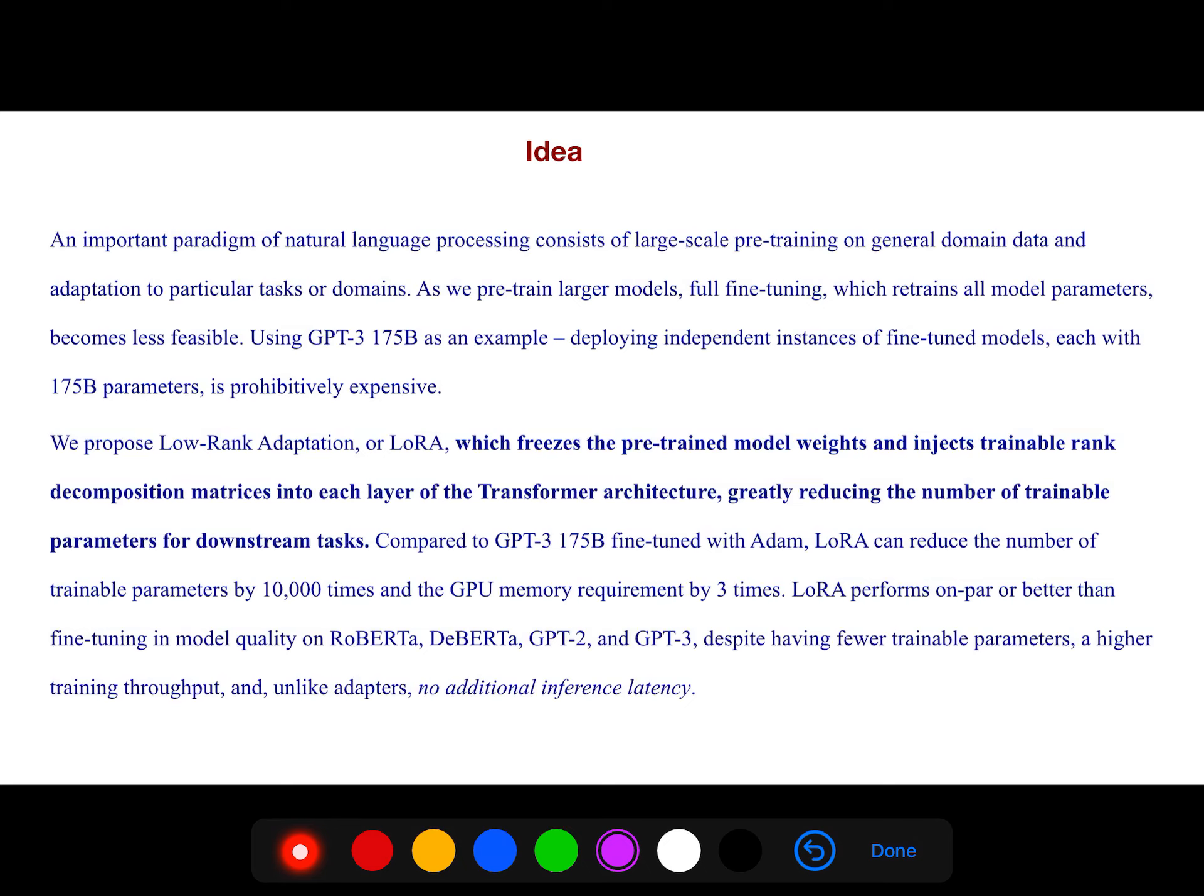Using GPT-3 175B as an example, deploying independent instances of fine-tuned models each with 175B parameters. So when you have 175 billion parameters, it's prohibitively expensive.